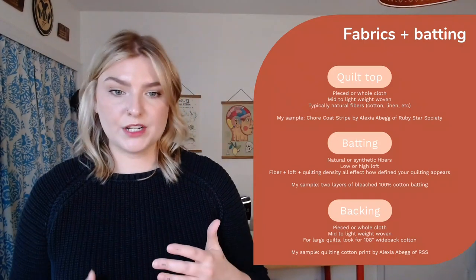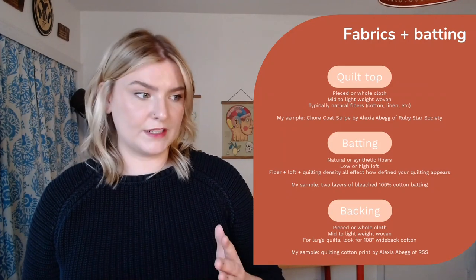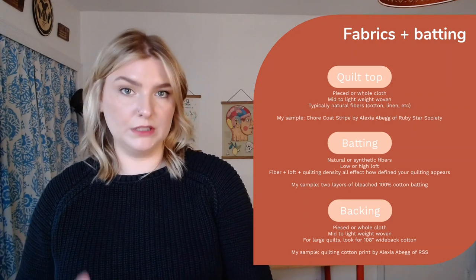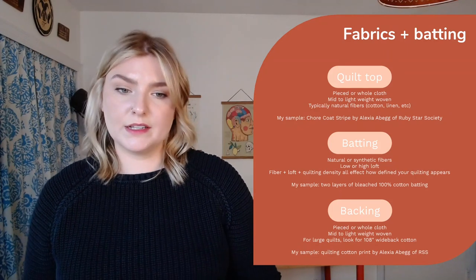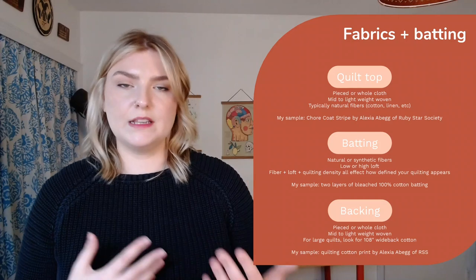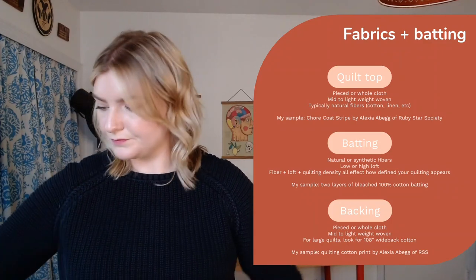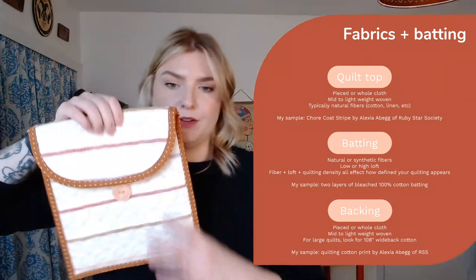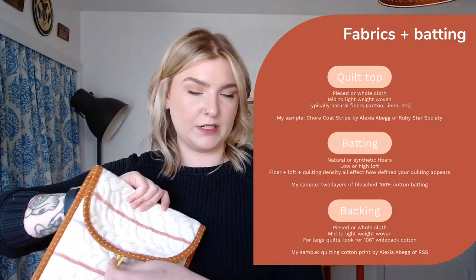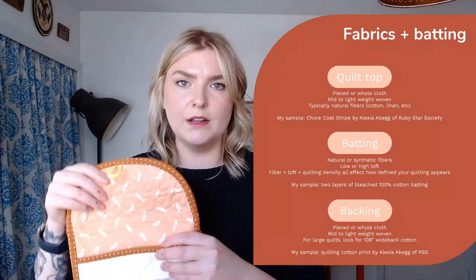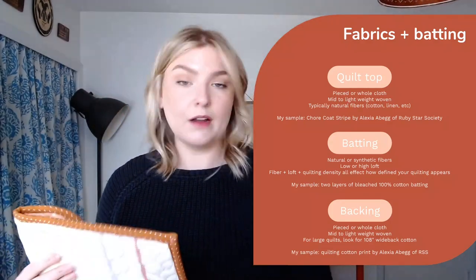The combination of these things you need to consider: your fiber, the loft you're looking for — because fibers are often available in multiple levels of loft, either low for a thinner batting or high loft for a thicker puffier batting — and then also consider your quilting density. All of these things will affect how defined your quilting looks in the finished result. In my sample, I used a 100% cotton low loft batting, but I actually used two layers of it because I did want something a little bit thicker that would allow my quilting to stand out just a little bit more than a single layer. I really liked the result.